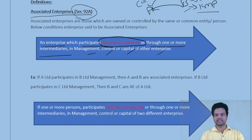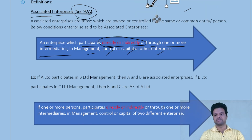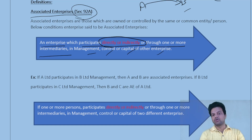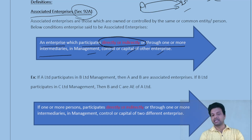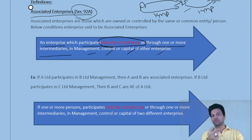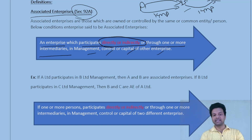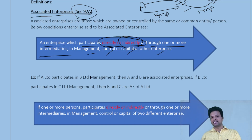Now take Company A, B, and C. Company A has control over Company B, and Company B in turn has control over Company C. A participates in KMP appointment for B, and B has decision control over C's KMP appointment. So A and B are associated enterprises, B and C are associated enterprises, and indirectly A and C also become associated enterprises.